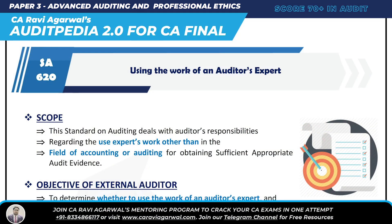Hi everyone, this is from Auditpedia 2.0. We are dealing with the 600 series using the mnemonic AIE: A for using the work of another auditor (ISA 600), I for using the work of internal auditors (ISA 610), and E for using the work of an auditor's expert (ISA 620). Let's crack ISA 620.